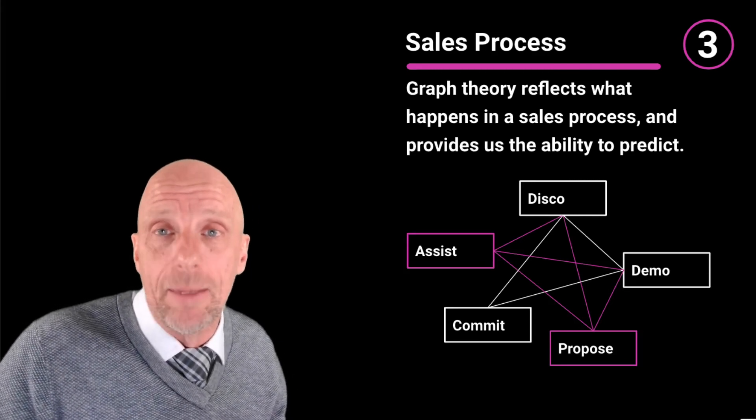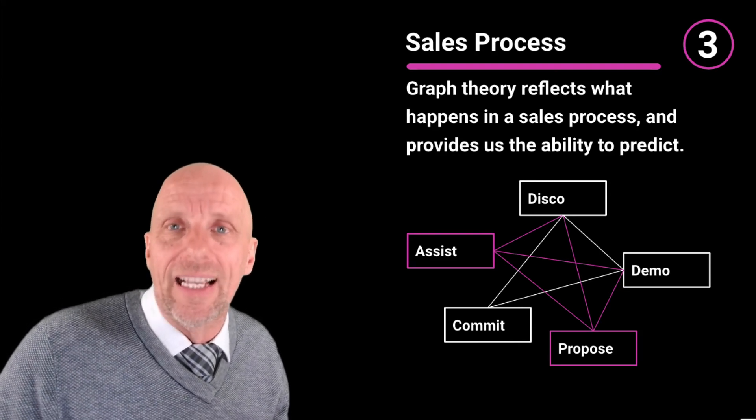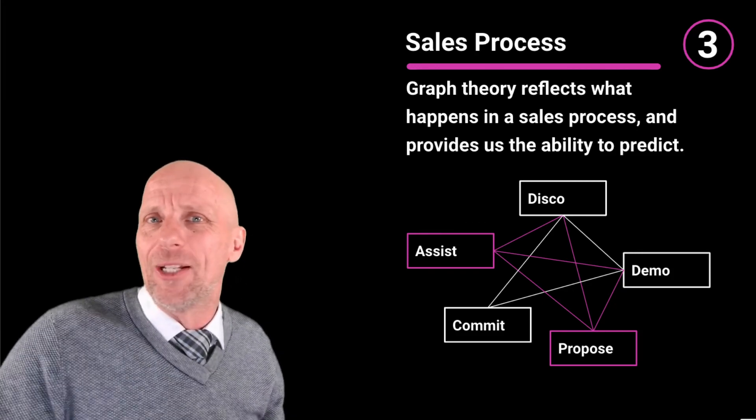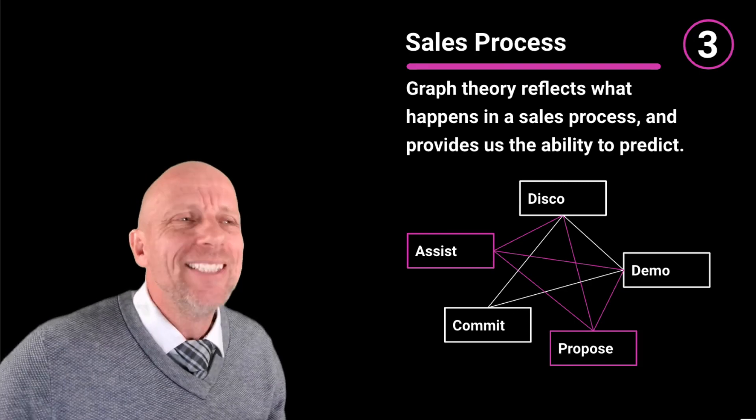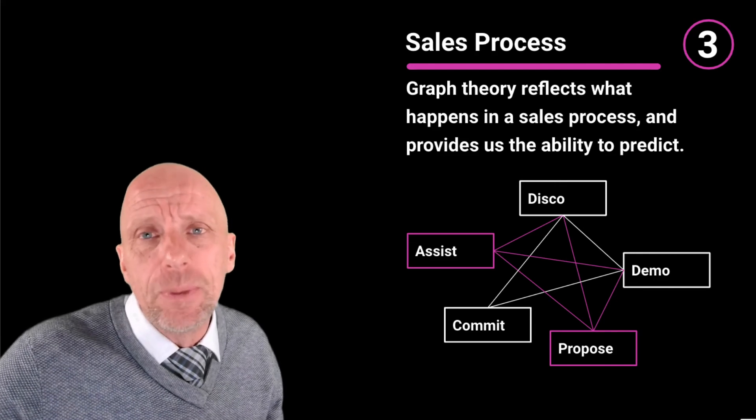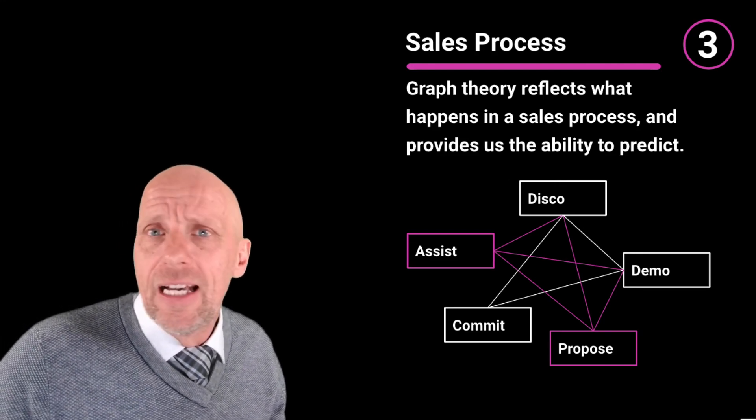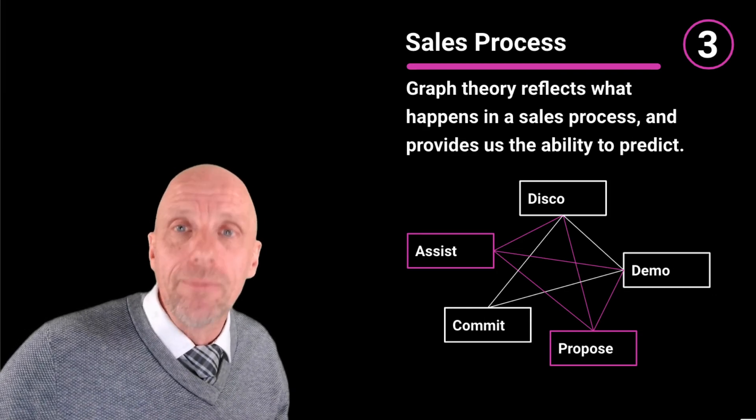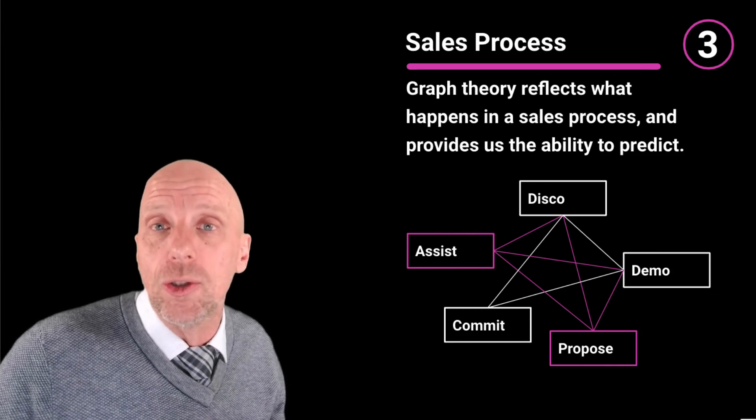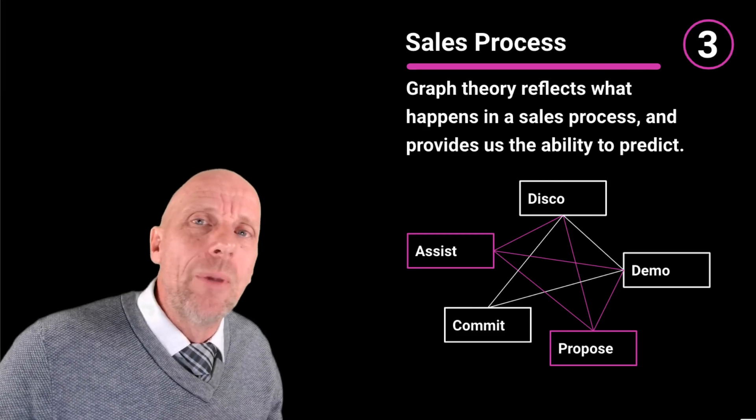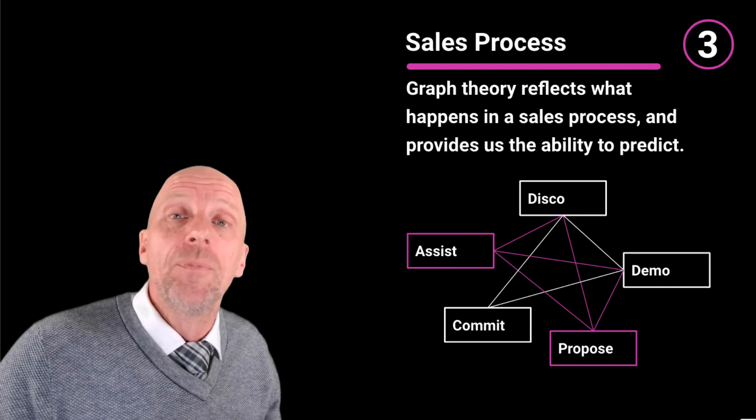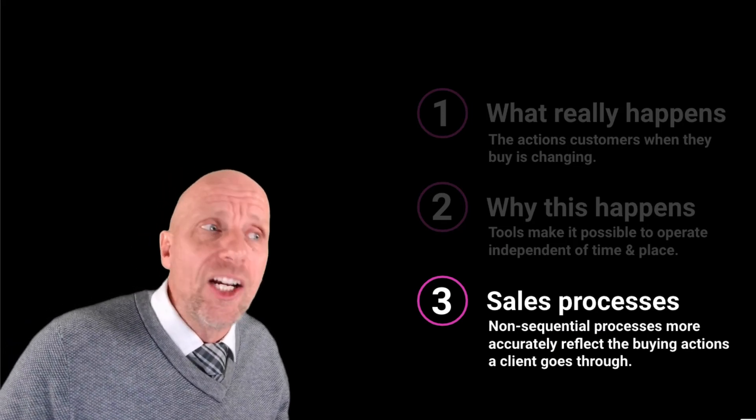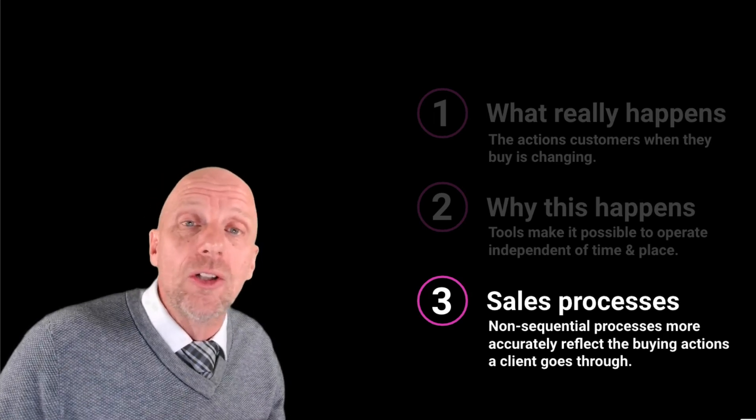This shows us that as we move to non-sequential sales processes, as I depict down here, and we start complicating that with additional stages, that it is a correct reflection of what is happening. It is not the sales process which is historically depicted as linear or sequential, but it is this graph theory-based, node network-based, non-sequential process. What a number of words were there. All those words are more reflective of the buying behavior. This particular graph that you see down here is way more reflective. In the future, we can calculate the conversion rate of a future meeting based on the conversion rate of the past and the current block. That means we can calculate on the path, what is the most likely path to succeed, and start making the correct suggestions.